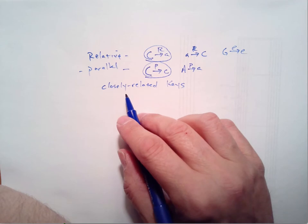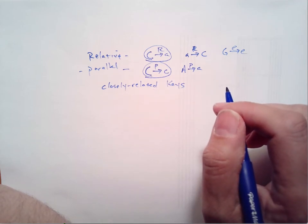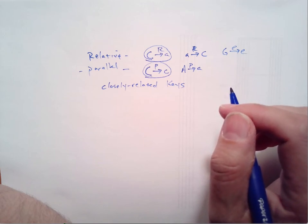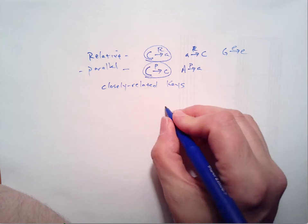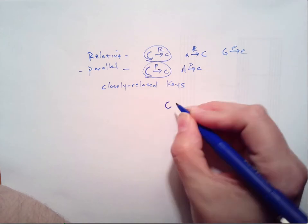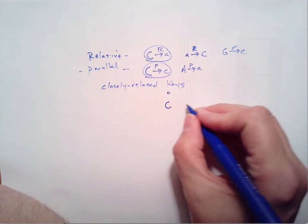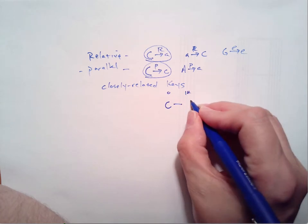A simple definition of closely related is all keys within a plus or minus one sharp or flat from a given key. For example, if we're in the key of C, we know that has zero sharps and flats. And if we go to one sharp, we've got G major.